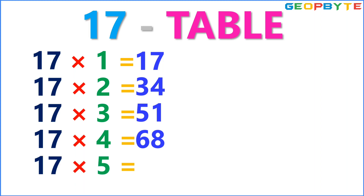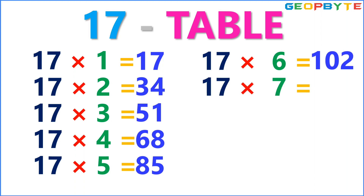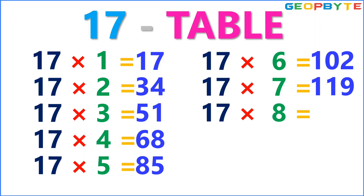17 fives are 85. 17 sixes are 102. 17 sevens are 119. 17 eights are 136.